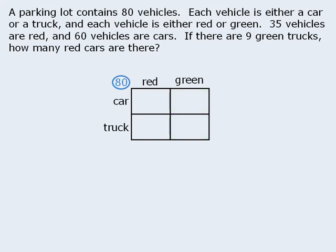Our ultimate goal will be to place each of our 80 vehicles in one of the four boxes depending on the vehicle's characteristics. So in this box we'll place red cars, in this box we'll place green cars, in this box we'll place red trucks, and in this box we will place green trucks. Now the question asks us to find the number of red cars. So let's add this asterisk in this box to remind us of our goal.